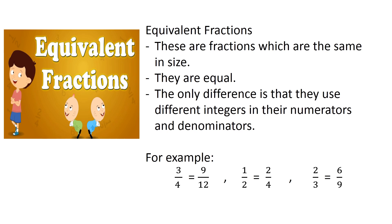They are equal and the only difference is that they use different integers in their numerators and denominators. For example, 3 over 4 is equal to 9 over 12. How come they are equal if they have different numbers? If you simplify 9 over 12, all you have to do is divide 9 by 3 and divide 12 by 3, and you will get 3 over 4.